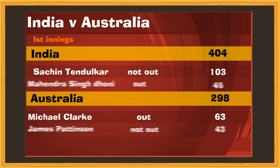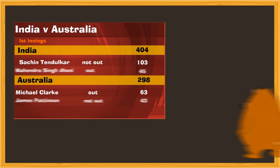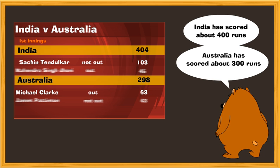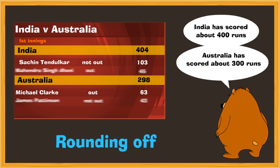Did you notice something strange? Is Balu reading out the wrong scores? Does he want to fool Hop? No, Balu is not wrong. He is just doing something known as rounding off. Sometimes, for the sake of convenience, instead of stating the exact number, we round it off to the nearest multiple of 10 or 100 or even 1000. This is known as rounding numbers.